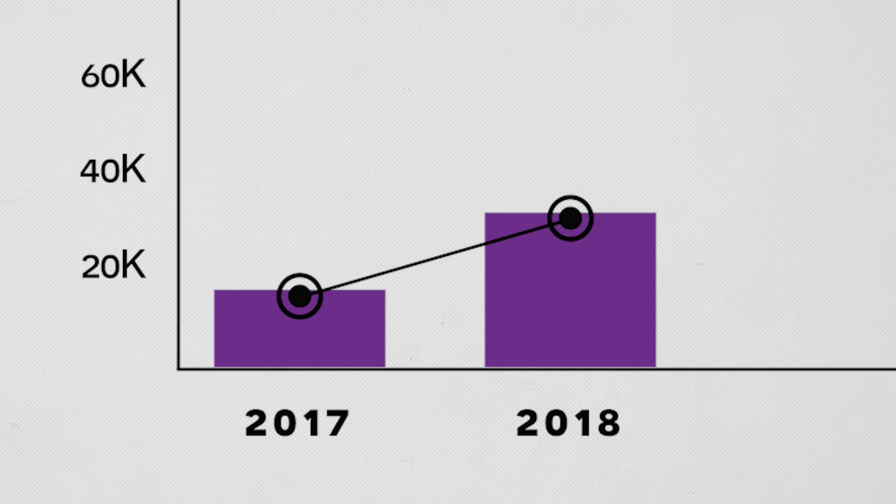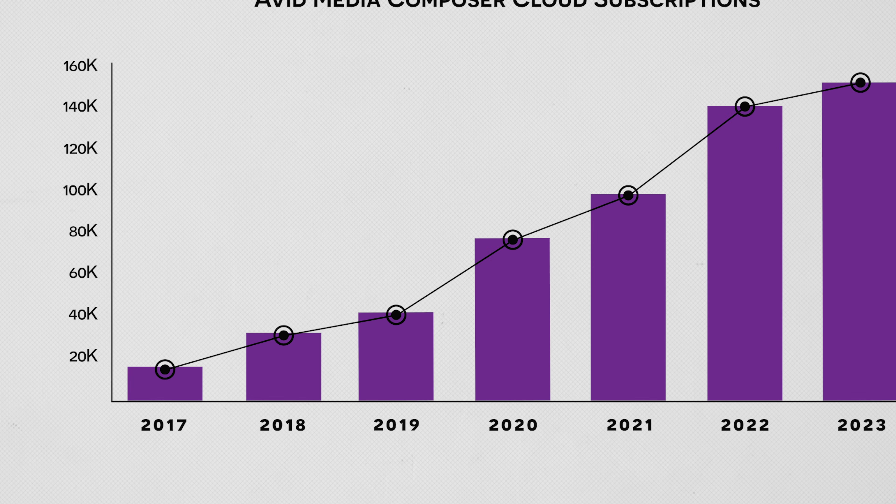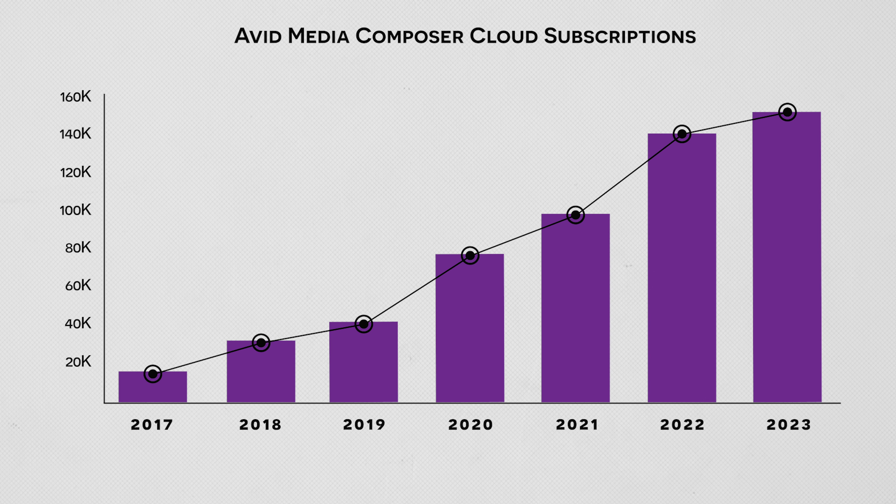At a business level, Avid reported 15,000 to 20,000 Media Composer cloud subscriptions in late 2017 and into early 2018. That may seem low — how can you dominate one industry with only 20,000 seats of software? But keep in mind, seven years ago not every Media Composer user had a cloud subscription; many users still had legacy licenses. If we fast forward to late 2023, Avid reported over 150,000 cloud subscriptions for Media Composer prior to their acquisition by the private equity firm Symphony Technology Group. Avid remains the standard for film and TV editing in 2024.